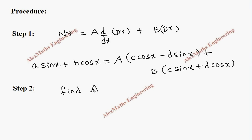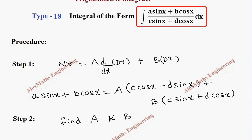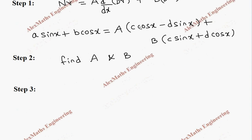In step 2, we find the constants A and B by equating the coefficients of sinx and cosx on both sides and solving the resulting equations.